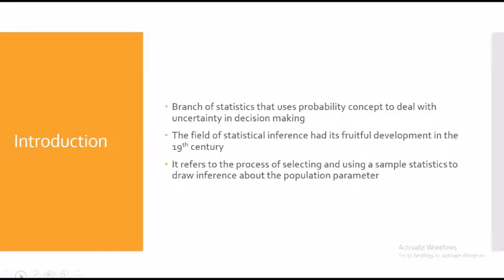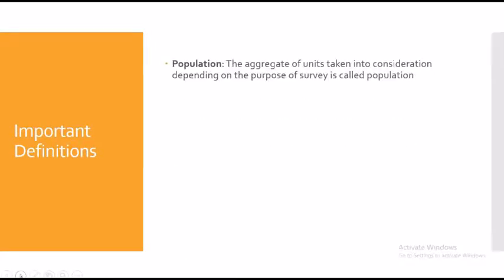Now let's move on to some important definitions. Population: the aggregate of units taken into consideration depending on the purpose of survey is called a population. For example, if your study is concerned about the weight of all the students of a particular college, then the students in that college are called the population. If you want to randomly pick a certain number of students from the college — say 13 — those randomly picked students are called a sample of that population.